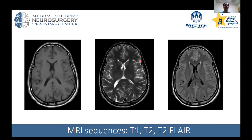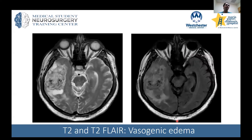A T2 FLAIR is pretty much the same as a T2, except the signal for the fluid spaces is inverted, meaning CSF is dark. This is nice for conditions like multiple sclerosis, where you may have lesions that are bright on T2, and you want to contrast the lesions around the ventricle better than if the ventricle were already bright. FLAIR is a good one for picking up pathology.